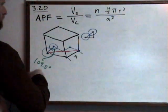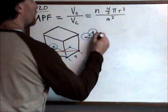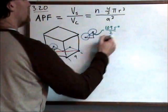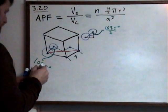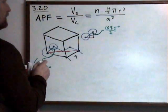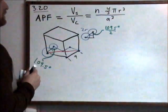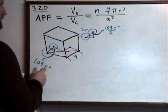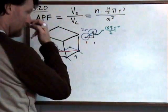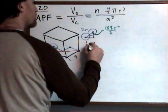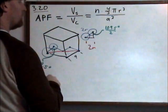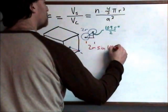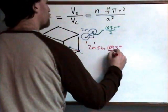And this angle right here is 109.5 degrees divided by 2. The hypotenuse is 2R, so this red distance here is 2R times the sine of 109.5 degrees divided by 2.